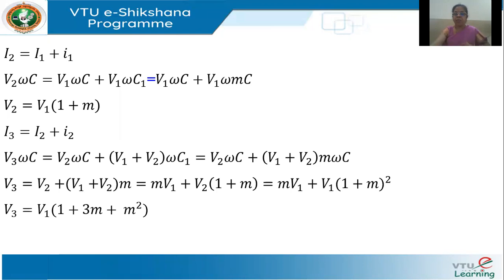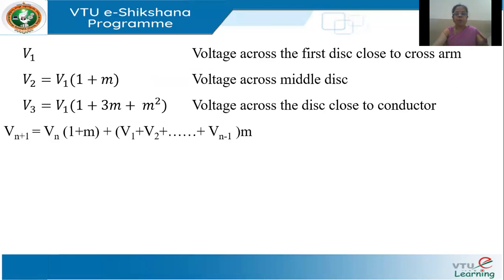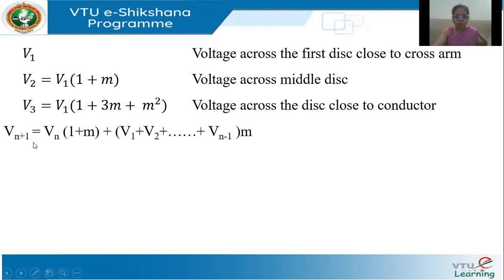To summarize: V1 is the voltage across the first disc close to the cross arm; V2 = V1·(1 + m) across the middle disc; and V3 = V1·(1 + 3m + m²) across the disc close to the conductor. For any arbitrary number of discs, the general recurrence is: V_{n+1} = V_n·(1 + m) + (V1 + V2 + ... + V_{n-1})·m.